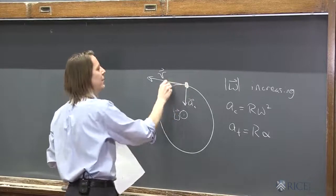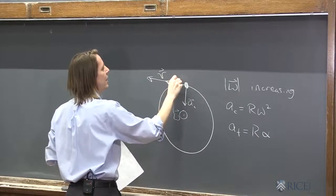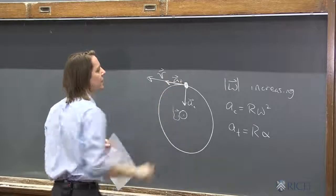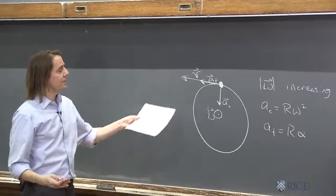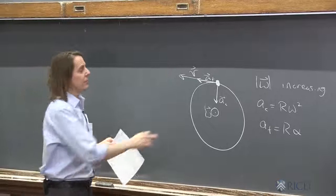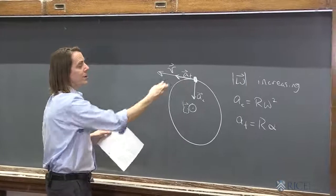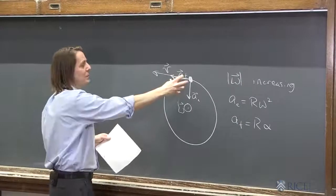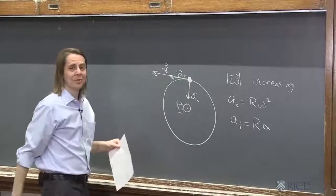So the total acceleration is just the vector sum of those two. Since they're always perpendicular to each other, they really just make vector components in a little Cartesian coordinate system that spins around the circle. So if I had to draw the total acceleration vector, there it is, A. But for this kind of motion, we always break it into those components.